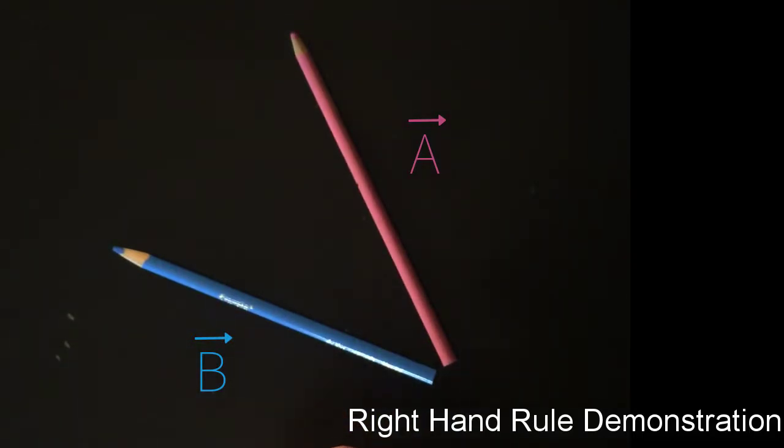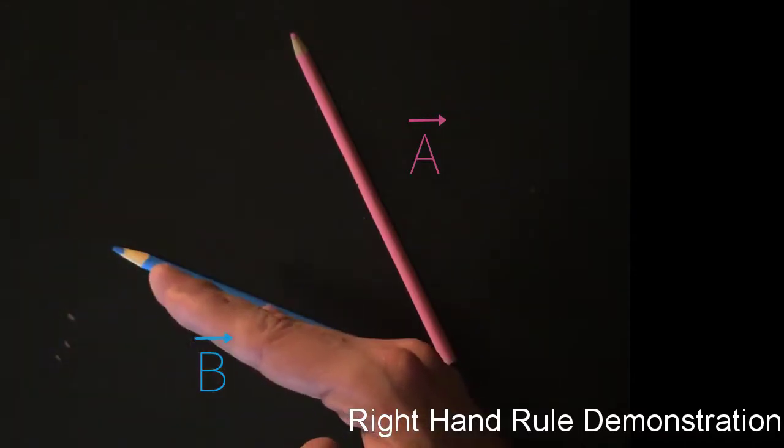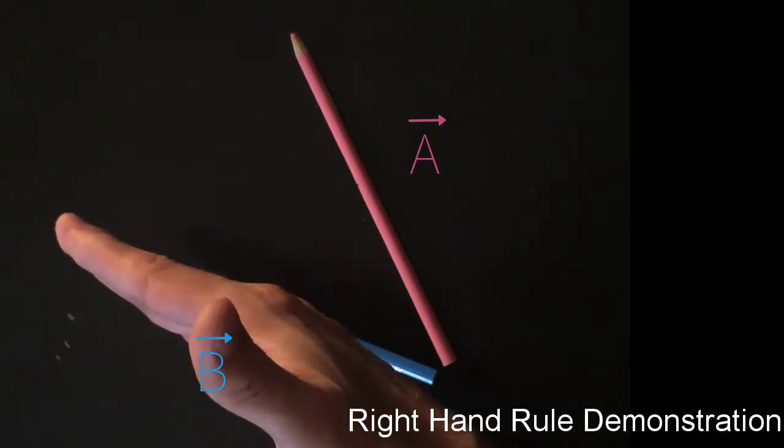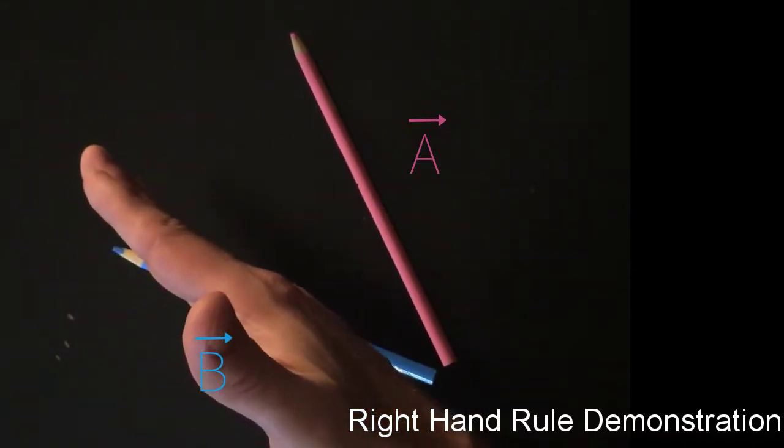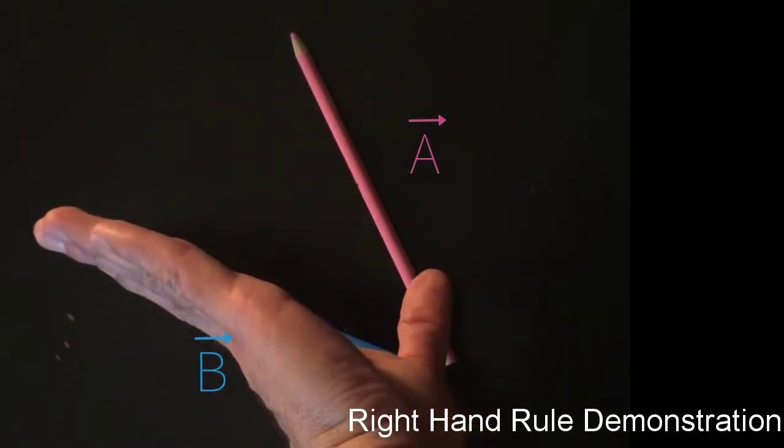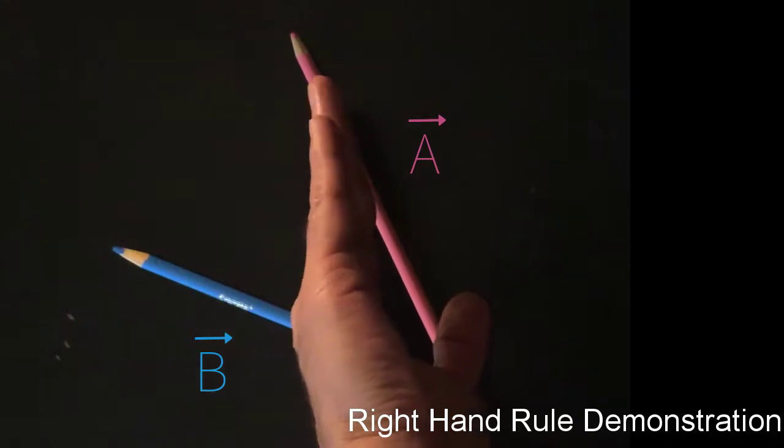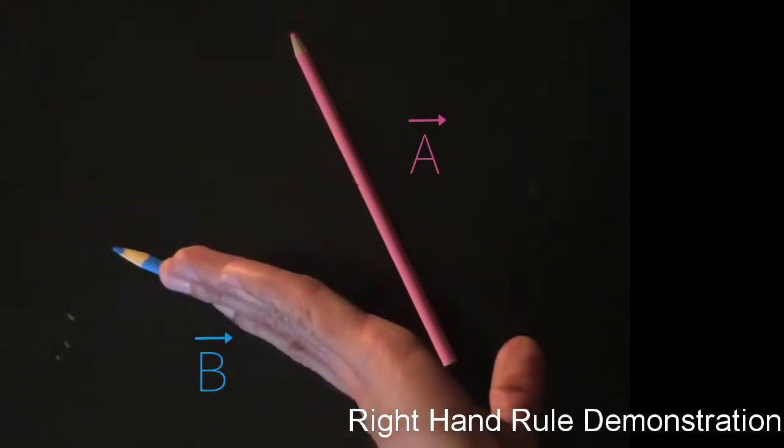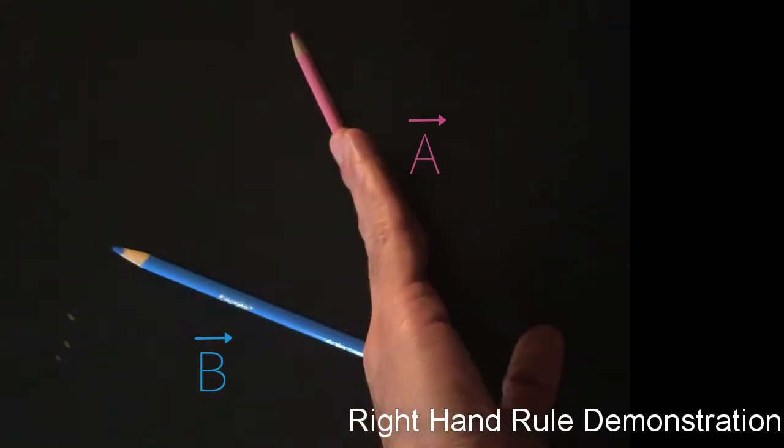If I want B cross A, then I would point my fingers in the direction of B. But my fingers don't flip backwards, so I have to have my fingers this way in the direction of B so they flip in the direction of A. B cross A.